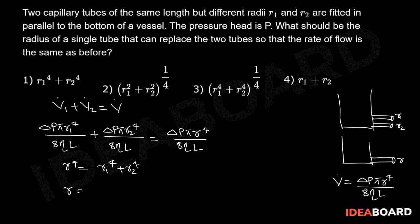Then R, the radius of the replaced tube, should be equal to R1 to the power of 4 plus R2 to the power of 4, whole to the power of 1 by 4. So the right answer for the given question is option 3.